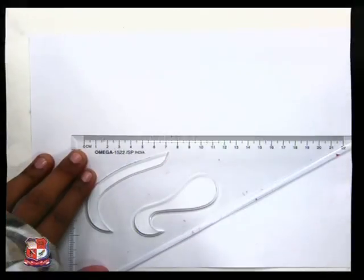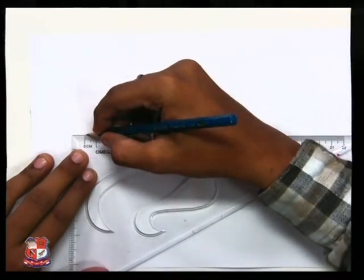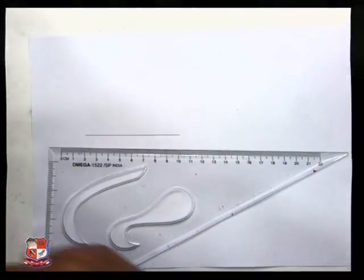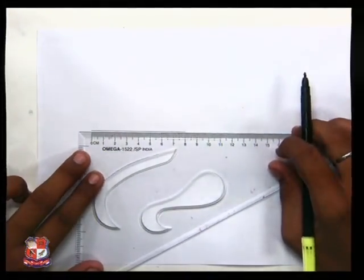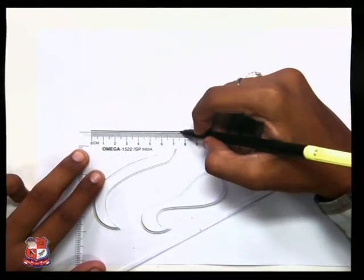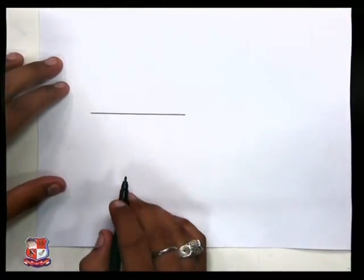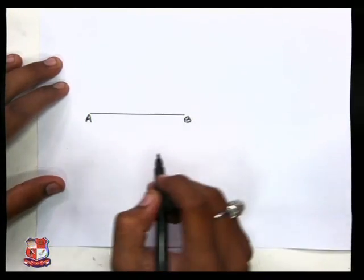First you need to draw a line of 80 mm. This line should be horizontal. Give name A and B to this line.